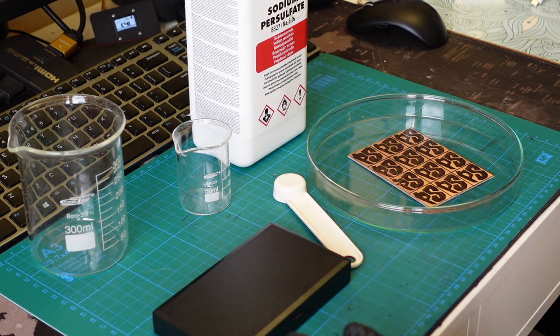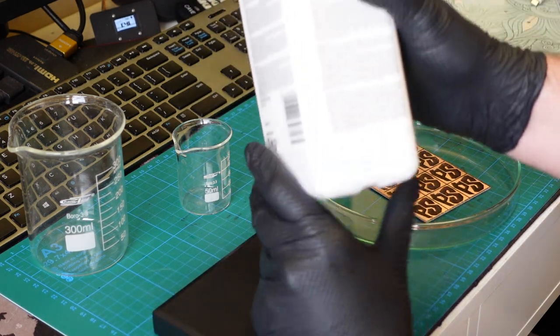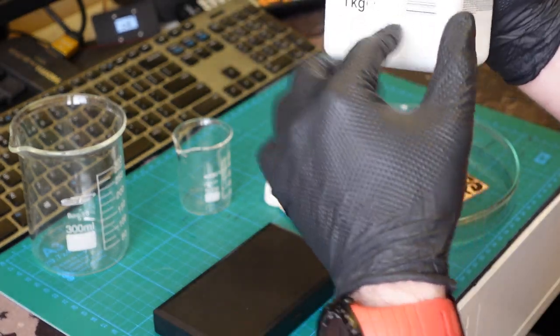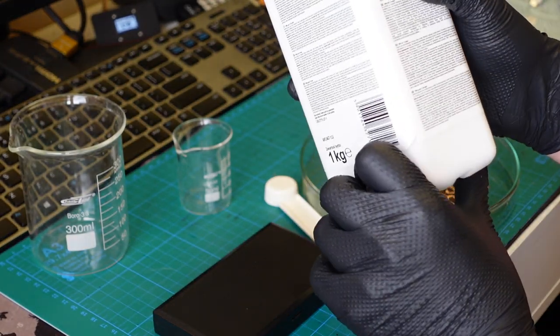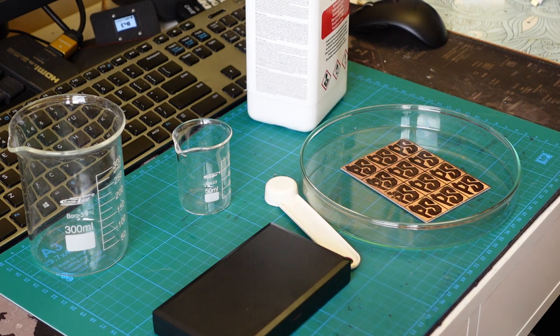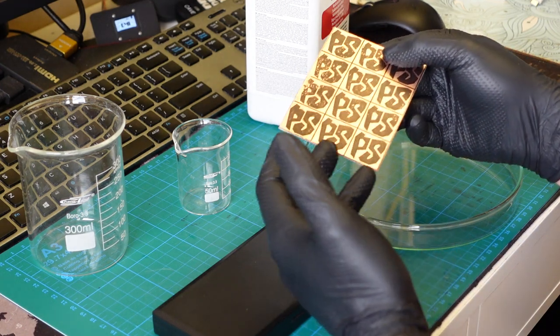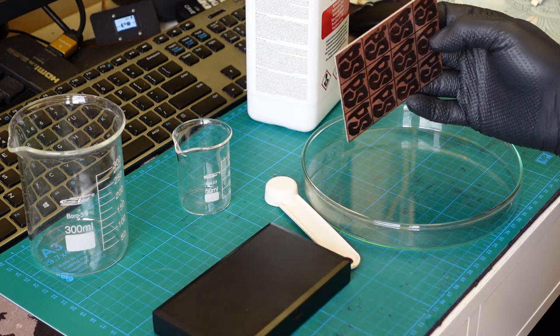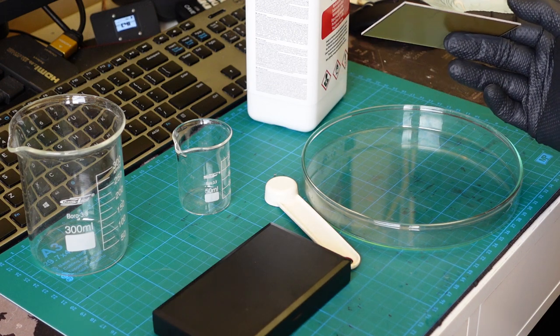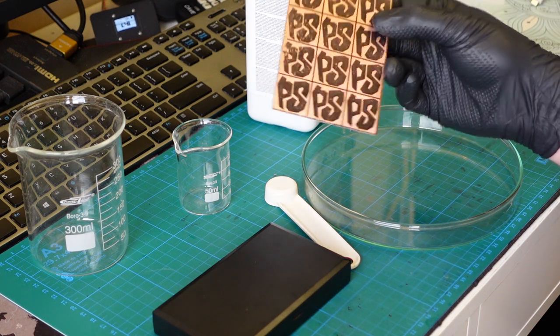How much of this stuff do you need? At least this manufacturer is very helpful because they tell you that a kilogram of this—the whole contents of this box—will react with 270 grams of copper. The problem is I have no idea how much copper is in here in grams, and I don't think I've ever seen any PCB seller actually telling you how much there is. From my perspective, that's trial and error.